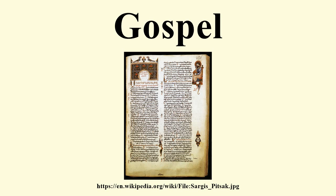By the turn of the 5th century, the Catholic Church in the West, under Pope Innocent I, recognized a biblical canon including the four gospels of Matthew, Mark, Luke, and John, which had been previously established at a number of regional synods, namely the Council of Rome, the Synod of Hippo, and two synods of Carthage. This canon, which corresponds to the modern Catholic canon, was used in the Vulgate, an early 5th century translation of the Bible made by Jerome under the commission of Pope Damasus I in 382.